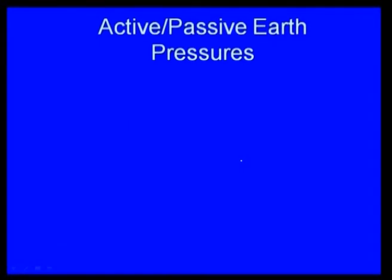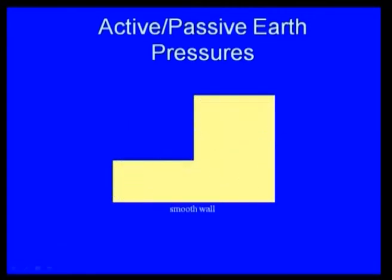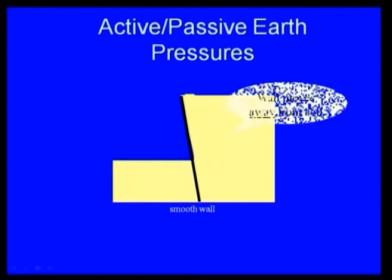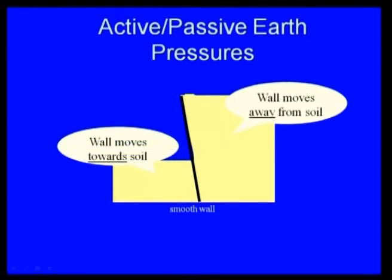We also started active and passive earth pressure. If you look at a smooth retaining wall moving away from the backfill material — that is, away from the soil — this is called the active state. Active state means the wall moves away from the soil.